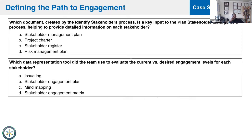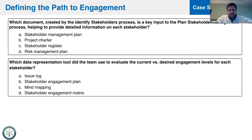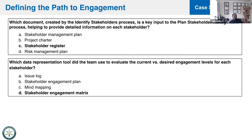Which document created by the Identify Stakeholders process is a key input to the Plan Stakeholder Management process, helping to provide detailed information on each stakeholder? That's what they call the register — the stakeholder register. Which data representation tool did the team use? The engagement matrix.